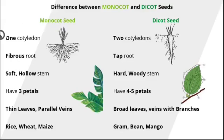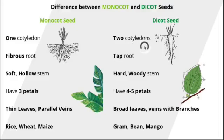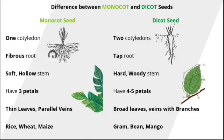The monocot seed has one cotyledon, that is one seed leaf, whereas the dicot seeds have two cotyledons. The monocot plants have a fibrous root — that is the root with small root-like structures that spread out like a web, but without the main root.